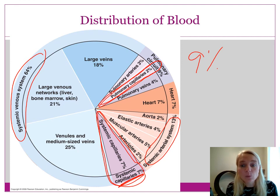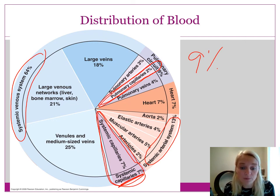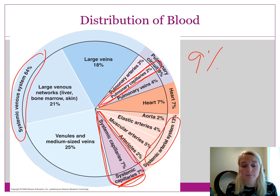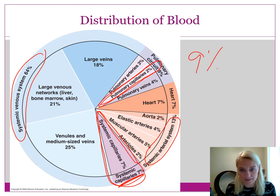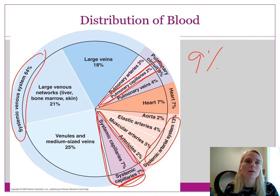The other 91% of your blood is just traveling — on route in your veins going back to your heart, or in your heart itself, which holds about 7% of blood volume at any moment. It's pretty amazing that with all the capillaries we have, only about 9% of our blood can fit through them at any one time, but it's enough to allow us to survive. That wraps up the anatomy of blood vessels.